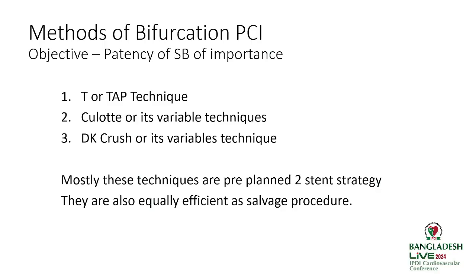Methods of bifurcation PCI: the main objective is to keep the patency of the side branch of importance. As Dr. Shivan has already pointed out those criteria, I'm not repeating those. Commonly, a practitioner has to be experienced with T-TAP technique, pullout, or DK crush. Mostly, these techniques are pre-planned two-stent strategy — 80% of cases are done as provisional stenting only, and 20% as pre-planned two-stent strategy. However, these techniques are equally efficient as a salvage procedure.